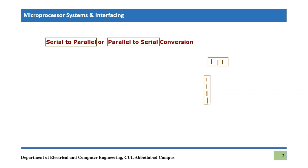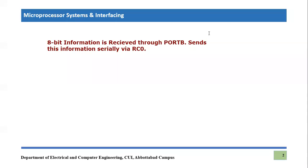Let's see how we are going to do this using rotate instructions. Eight-bit information is being received through port B — eight bits are simultaneously received. What we have to do is send this information serially via RC0. Eight pins are received through port B and those eight bits can be easily transferred serially using a single pin, RC0.